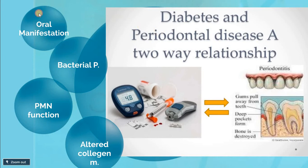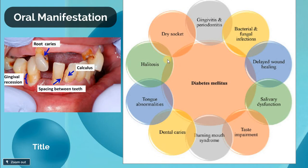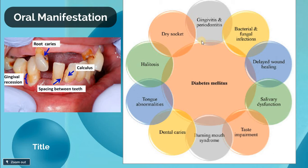Regarding oral manifestations, diabetic patients commonly present with delayed wound healing, xerostomia or salivary dysfunction, multiple caries, and a pathognomonic bad odor from ketoacidosis. They also show signs and symptoms of gingivitis and periodontitis, such as bleeding on probing, mobile teeth, and bone loss.